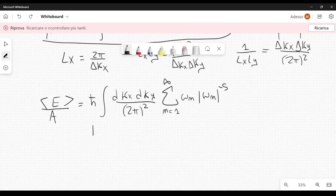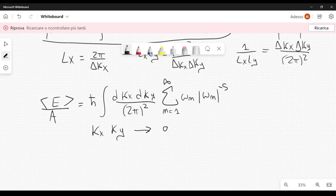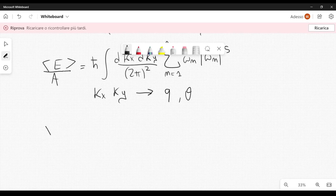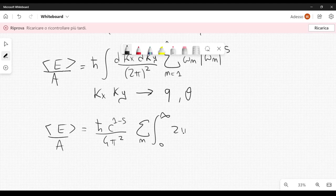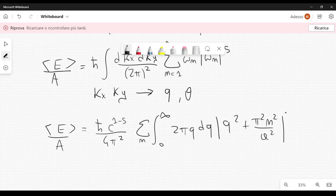Now, what we can do is to go from the domain kx, ky, to polar coordinates. So, I will use q for the radius and theta for the angle. So, you simply make a substitution to polar coordinates, and it's easy to check that you will get something like this, energy per area equal to, then you will get an expression like this, h-bar, c to the power of 1 minus s, and then you divide by 4 pi squared, summation over n, integral from 0 to infinity, 2 pi q dq, absolute value of q squared plus pi squared, n squared over a squared, raised to the power of 1 minus s over 2. So, I have simply used polar coordinates, and it means that q squared is equal to kx squared plus ky squared. And, this q here is due to the Jacobian of the transformation, and 2 pi simply comes out from the angular integration.